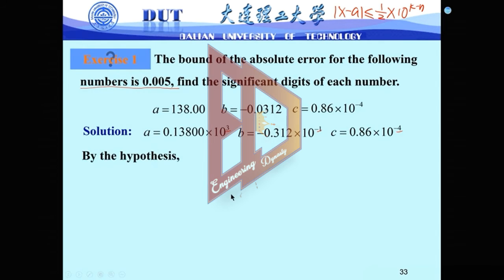Now by the hypothesis, we know the error bound is just 0.005. So also, we need to write the error bound by 0.5 multiply 10 to minus 2. So 0.5 is 1 over 2, multiply 10 to minus 2.